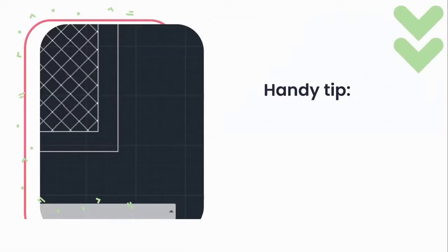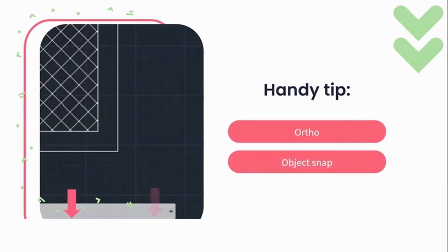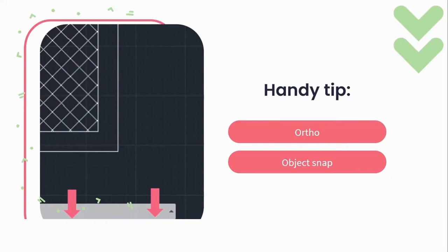Before we take another step further, I want to bring your attention to the object snap and ortho mode tool set. These tools are going to be a massive lifesaver when creating a technical drawing. They're both located at the bottom right-hand portion of the drawing screen. Your ortho mode when turned on is going to guide your line to create 90-degree lines, guiding your line in a very straight position. Your object snap is going to allow you, when creating your drawing, to automatically snap to a line.